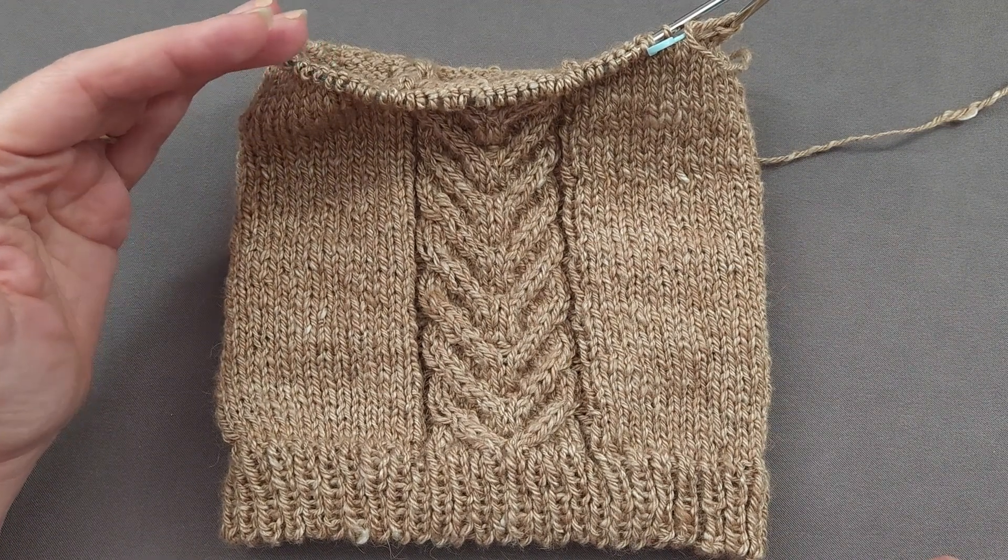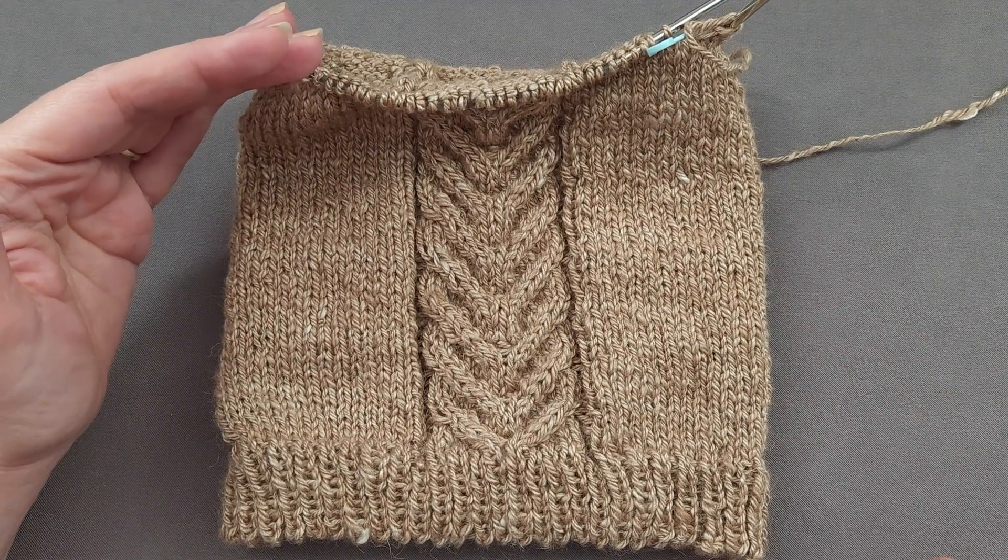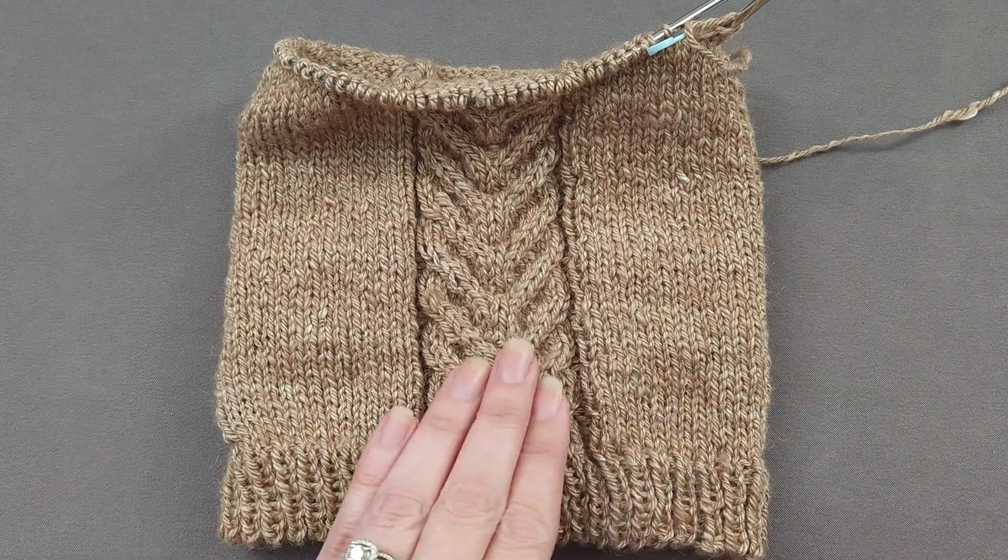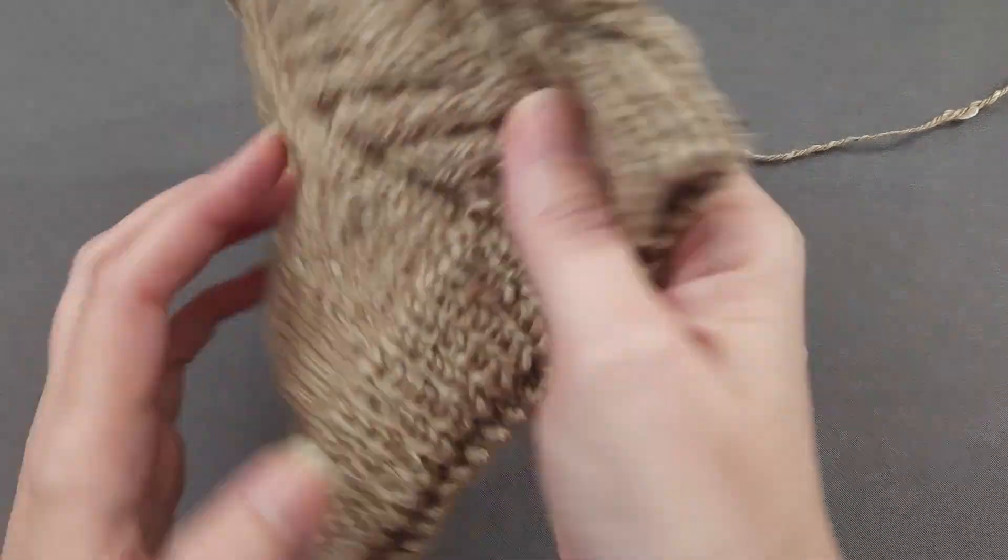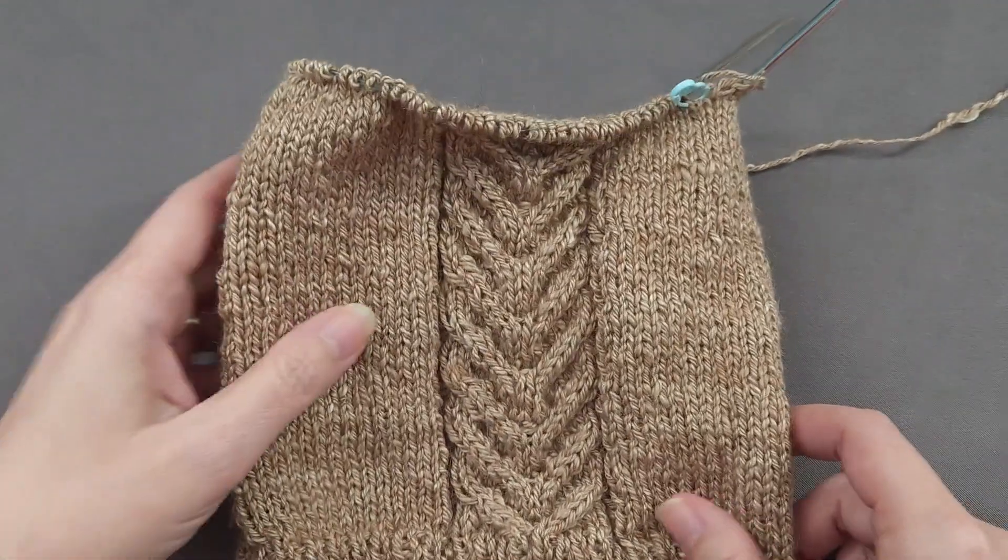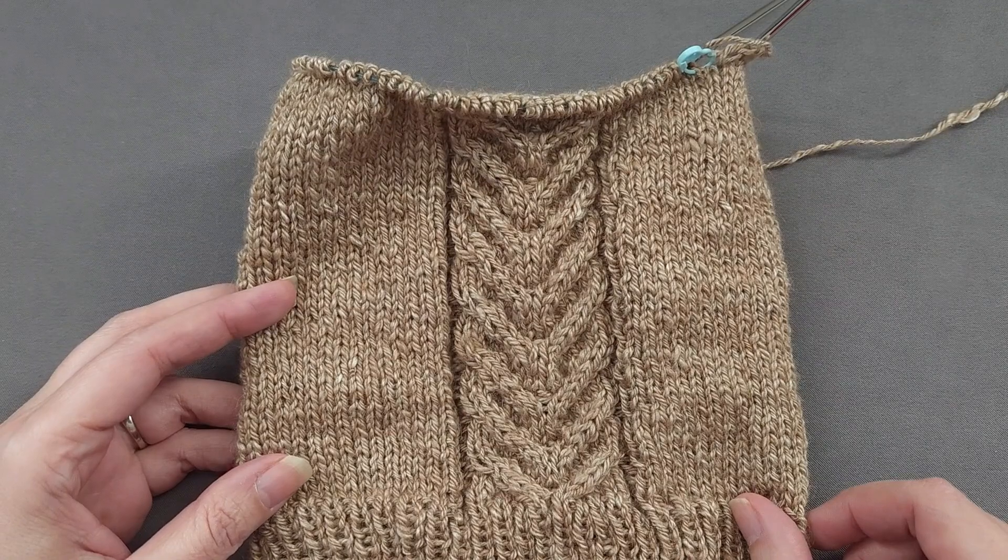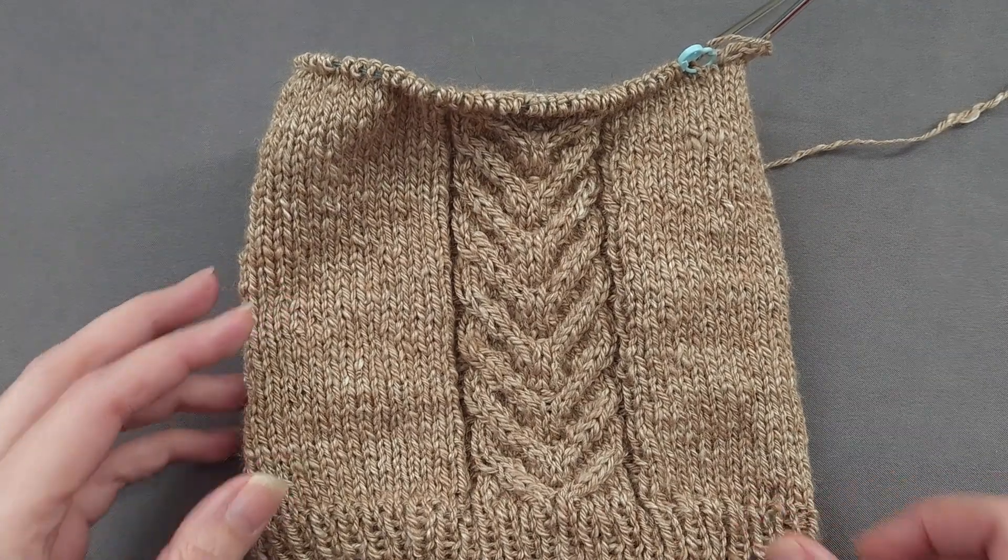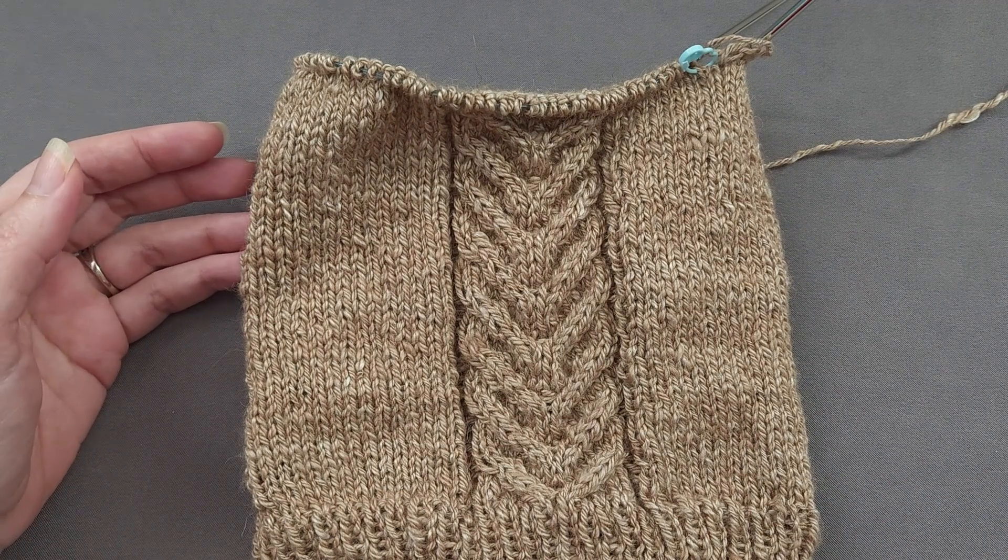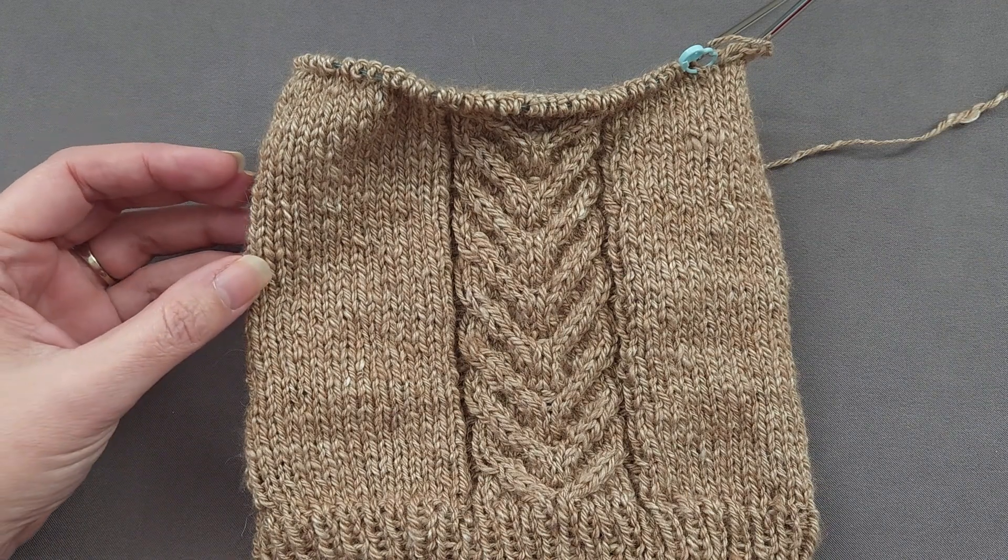As I shape the top of my hat, I'm choosing how many stitches there will be at the end of the shaping. Since my hat has one, two, three, four, five, six distinct sections, I'll end my hat shaping when there are two stitches left in each section, or has a final circumference of 12 stitches. That way I'll be able to just pull my yarn tail through the final 12 stitches to finish things off.